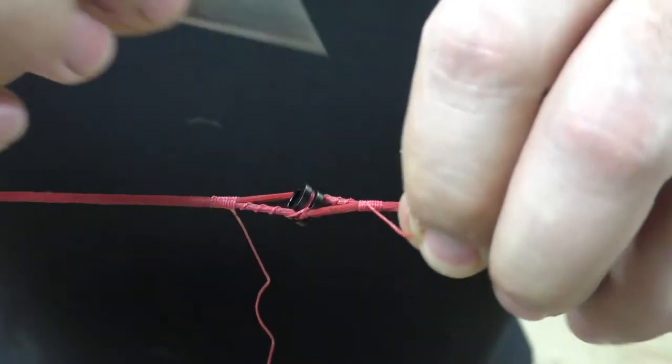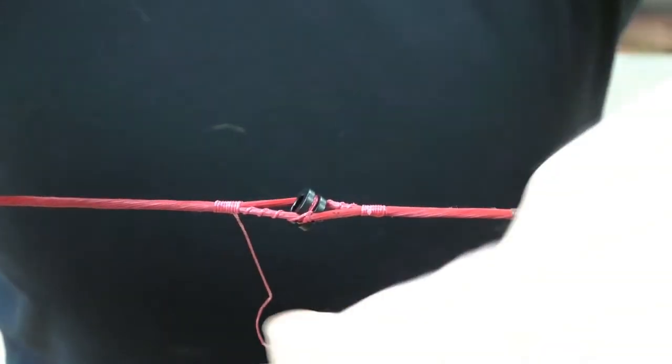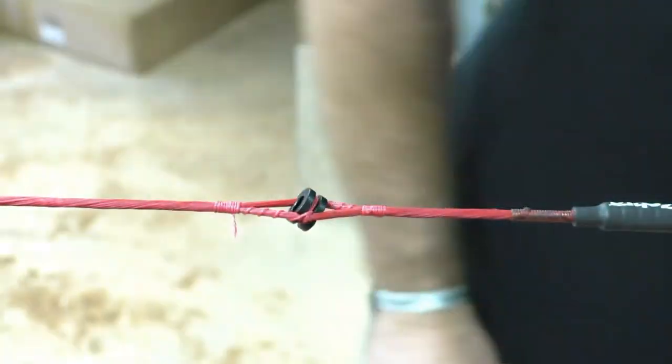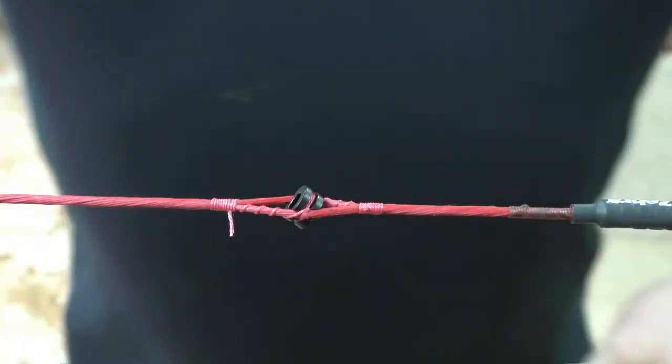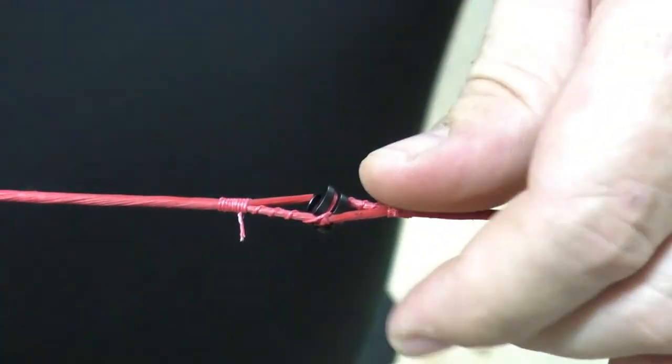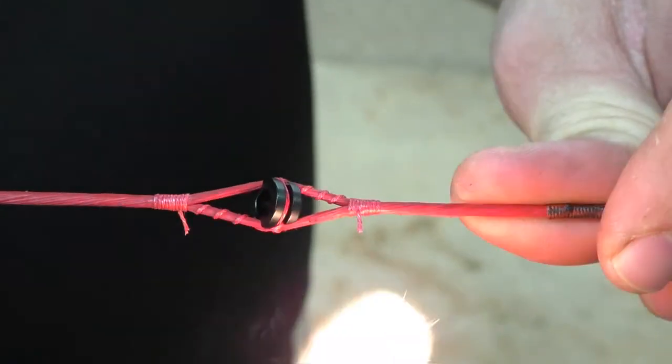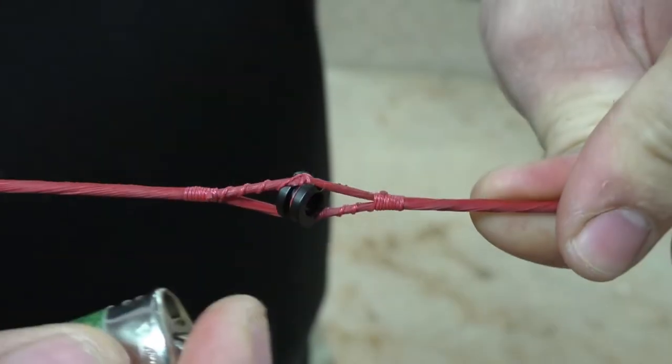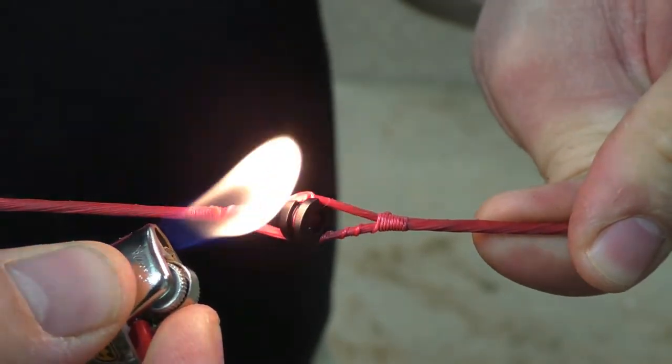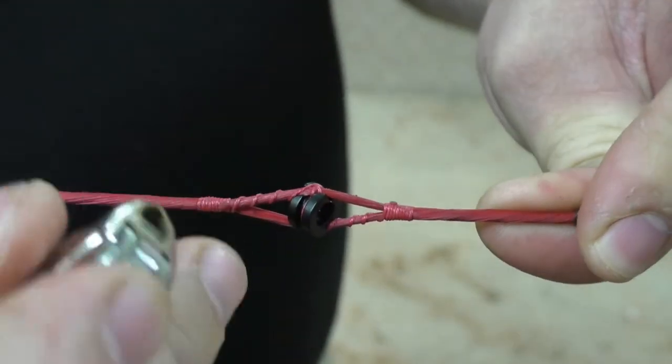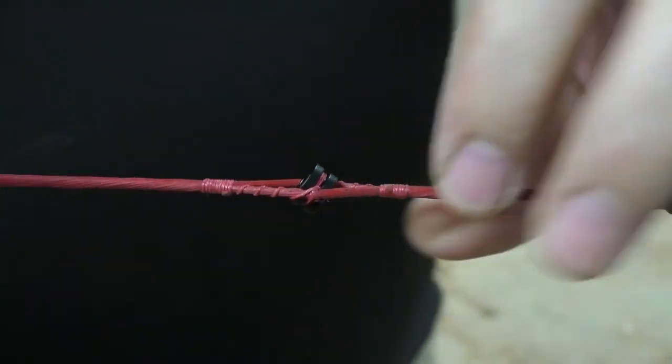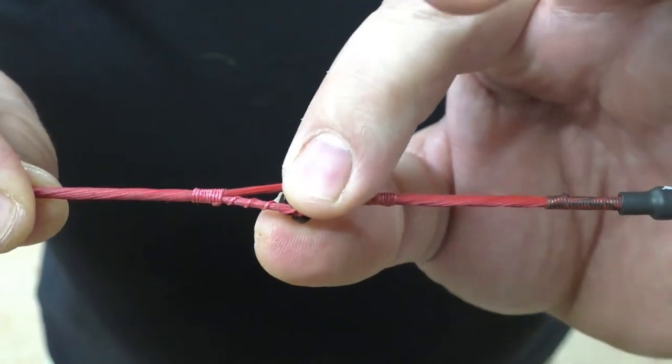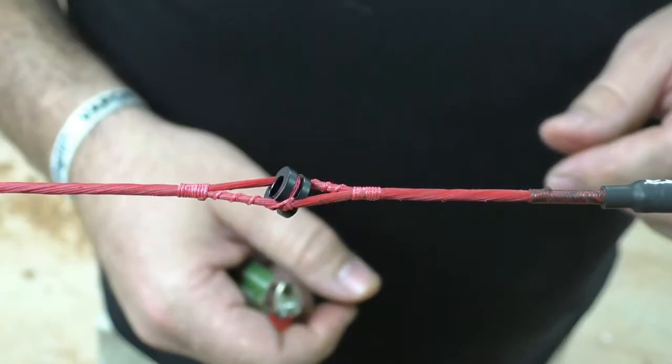We're going to cut these tag ends off to about, I don't know, three sixteenths of an inch. A little over an eighth. And then, we're going to melt those down with a lighter. I'm just going to keep it away from the string as far as I can. Just get that string to melt down and then push the end over. Same thing back here. Push that end over. And there you go. So that'll keep the peep from moving up or down in the string. It locks it in and keeps the strands even on both sides.